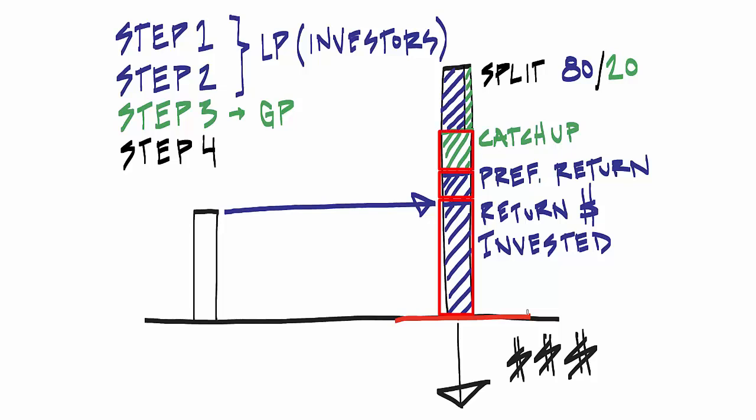And after that, for each additional dollar of cash distributed, 80 cents goes to the investors, and 20 cents goes to the general partnership.